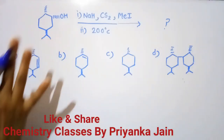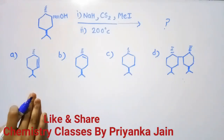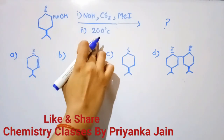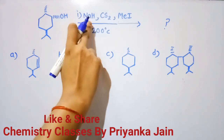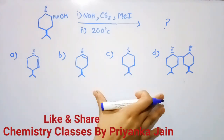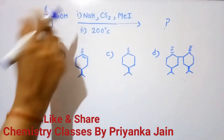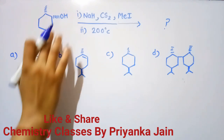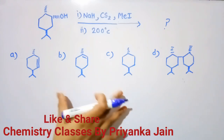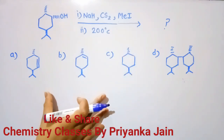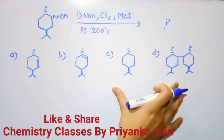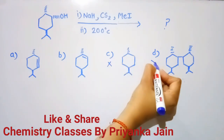Now see this question — it is the same type as the previous question; we have to just identify the stereochemistry. We have given this compound, and when we react it with NaH, CS2, and MeI and then further heat it, what will be the product? We have given four different options. We can see that this is an alcoholic compound and since it is a Chugaev elimination reaction, we will get alkenes. So two of the options with non-alkene products are wrong.